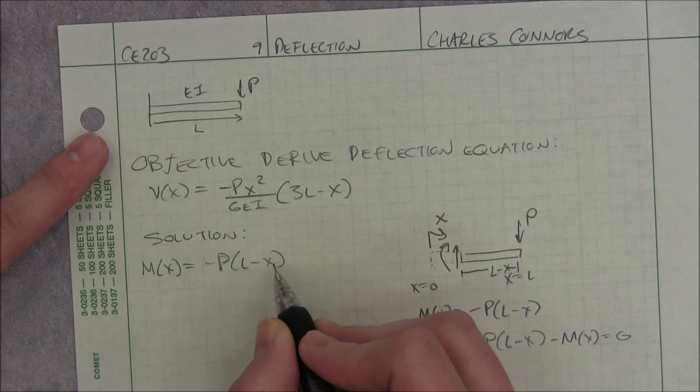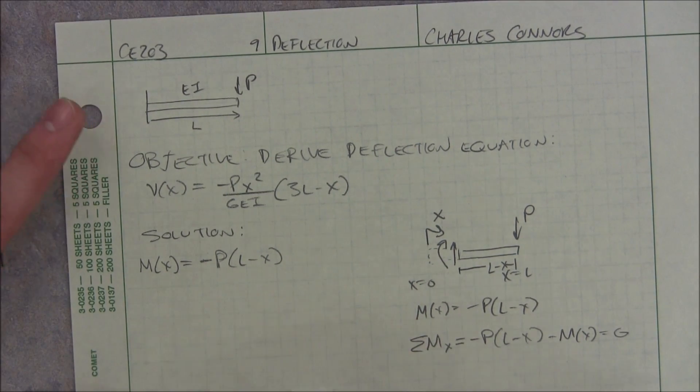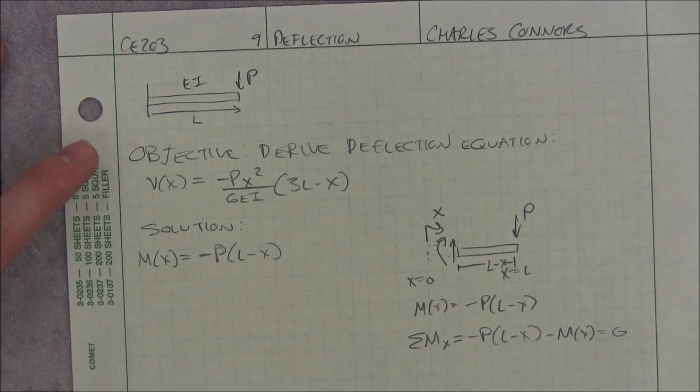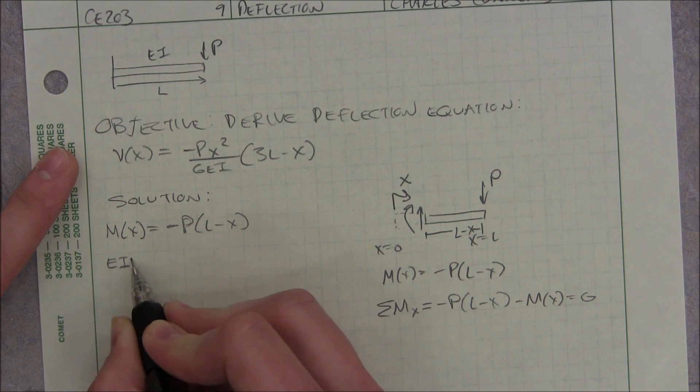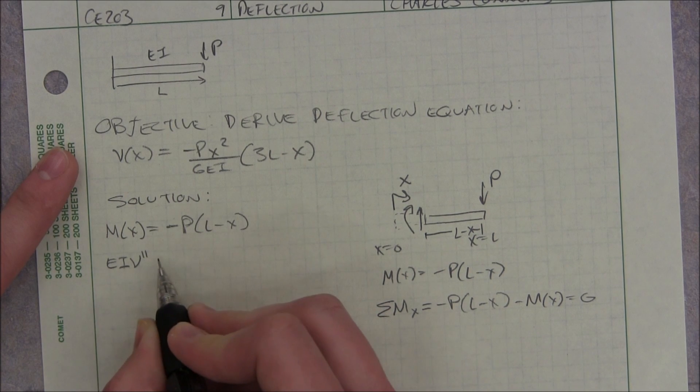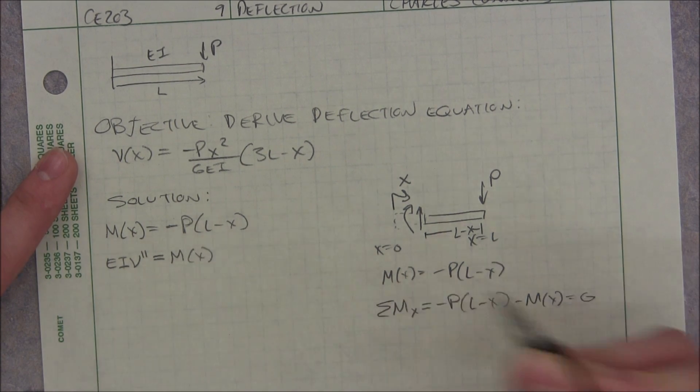I'll leave it L minus x because x can't be bigger than L and that means that this quantity is going to be positive, which is just convenient for integration. We're using the fact that EI, the double derivative of the deflection, equals the moment.